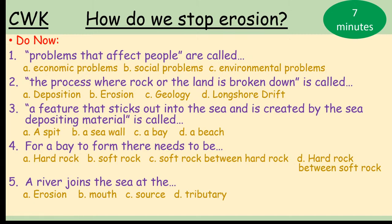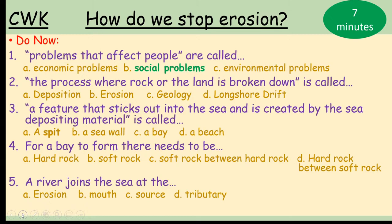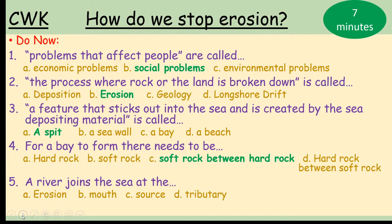Number one: problems that affect people are called social problems. Number two: the process where rock or land is broken down is called erosion. Number three: a feature that sticks out into the sea and is created by the sea depositing material is called a spit. Number four: for a bay to form there needs to be soft rock between hard rock — if we had just hard rock or just soft rock it would erode at the same rate giving a relatively flat line; we need changes in rock type for that uneven shape; if we had hard rock between soft rock we'd get a headland being formed. Number five: a river joins the sea at the mouth. Spend 30 seconds checking and correcting your answers with your green pens.